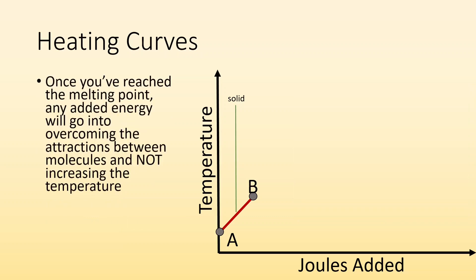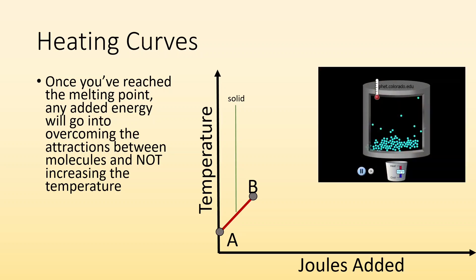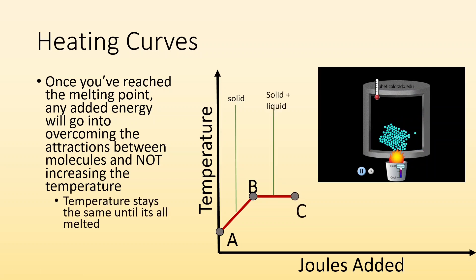So what's that look like on the graph? Well, temperature goes up. We only have the solid phase and that's going to continue heating until we get to the melting point. So once we've reached the melting point, any added energy will go into overcoming the attractions between the molecules and not increasing the temperature. So the temperature is going to stay flat. We add more heat. What's happening? It's turning all these solid particles into a liquid state and that's where all the energy is going. So what's that going to look like on a graph? Well, it's going to be a flat section because the temperature stays the same until all of it's melted. So during this part of the heating curve, we have both the solid and the liquid state present.